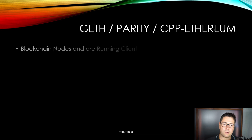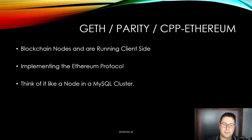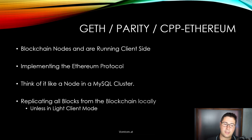Let's start with Geth, Parity, and CPP Ethereum — those are all blockchain nodes running client-side. Geth, Parity, and CPP Ethereum, and probably others, are implementing the Ethereum protocol. That means they are all doing exactly the same thing, just implemented in different programming languages. Geth is implemented in Go, and CPP Ethereum is implemented in C++. You can think of it like a node in a MySQL cluster — every single node does pretty much exactly the same thing.